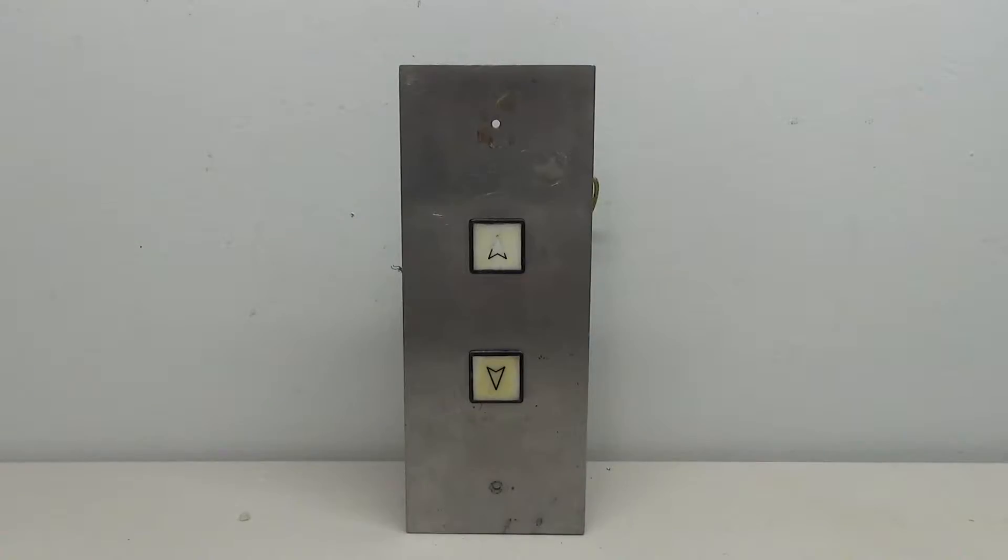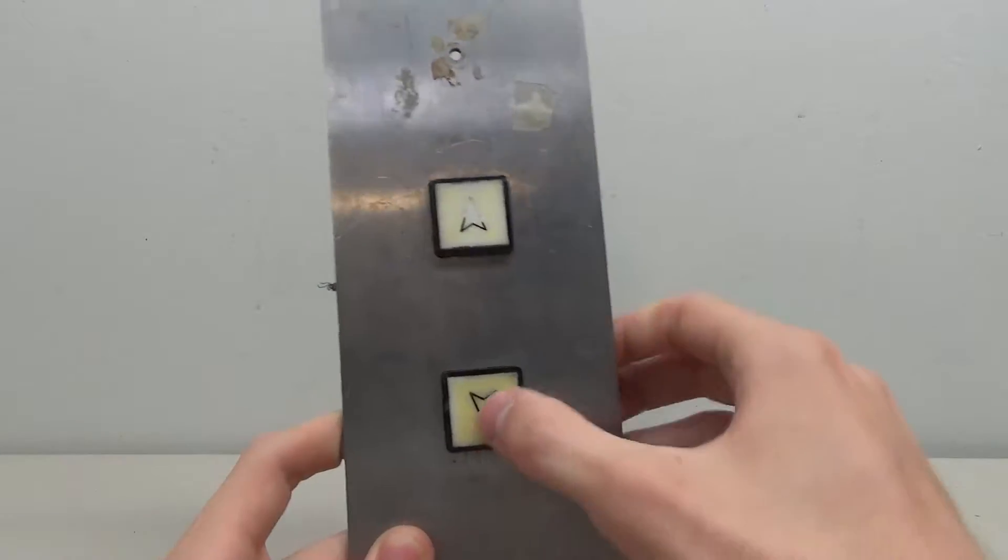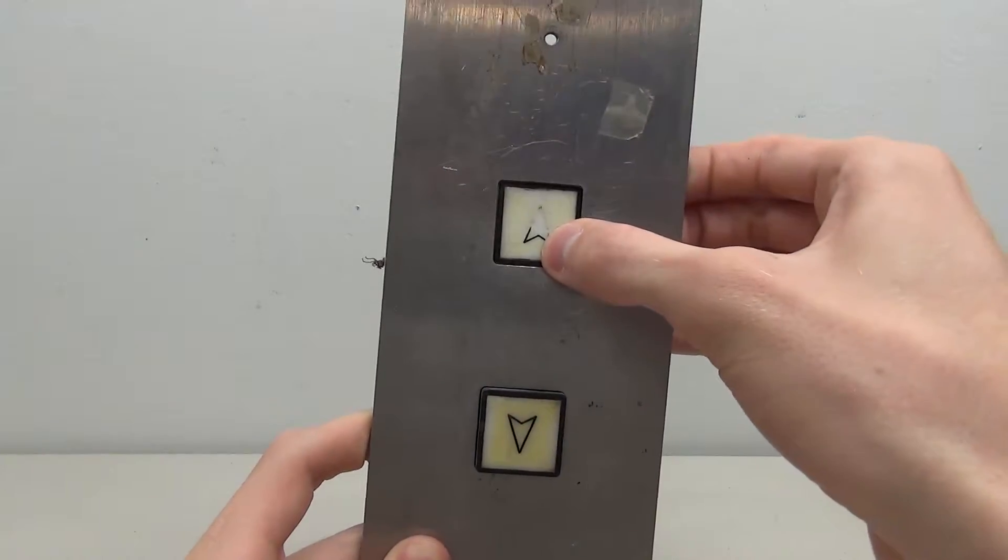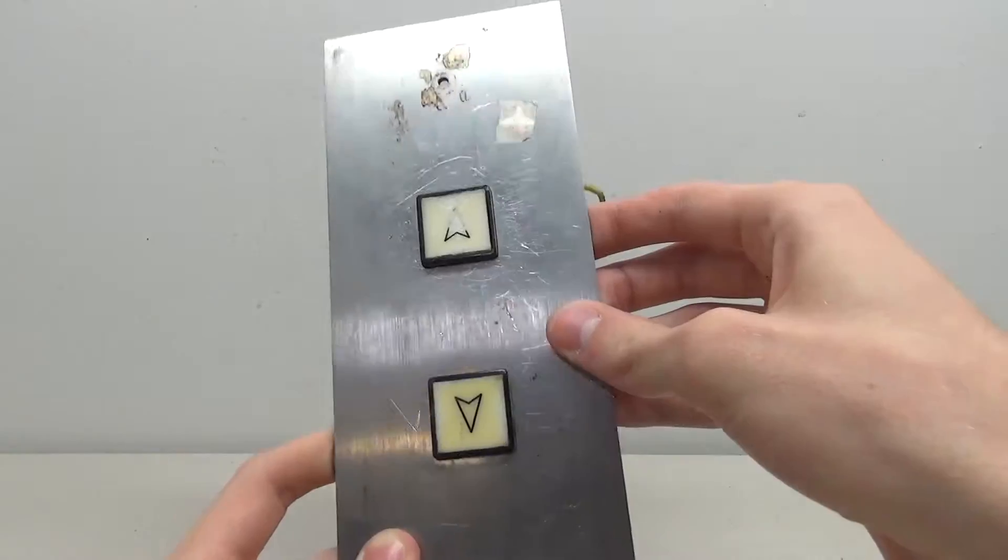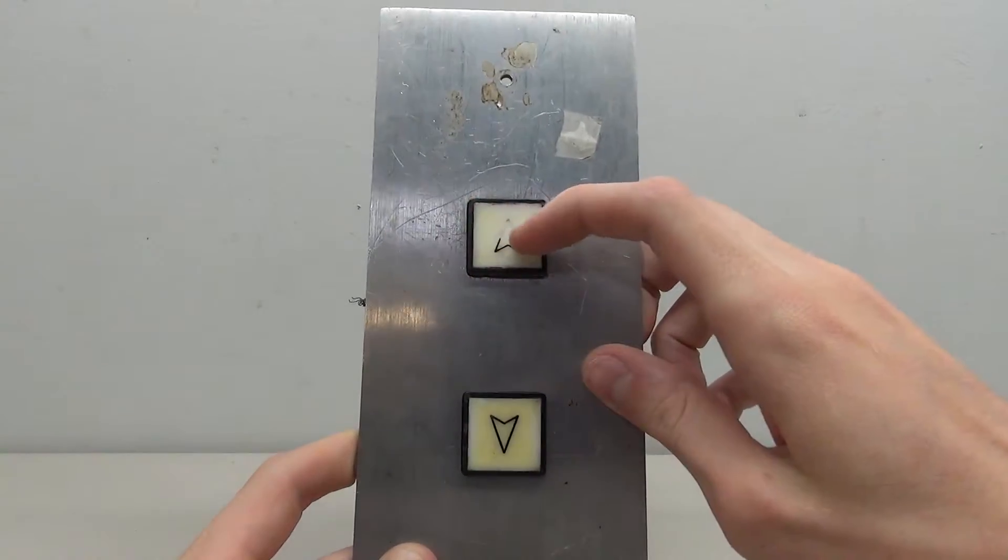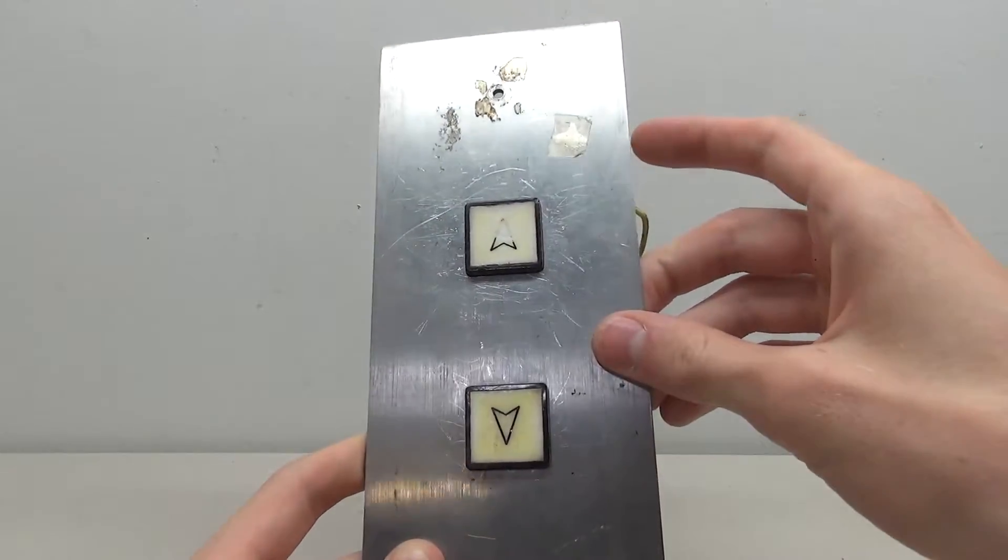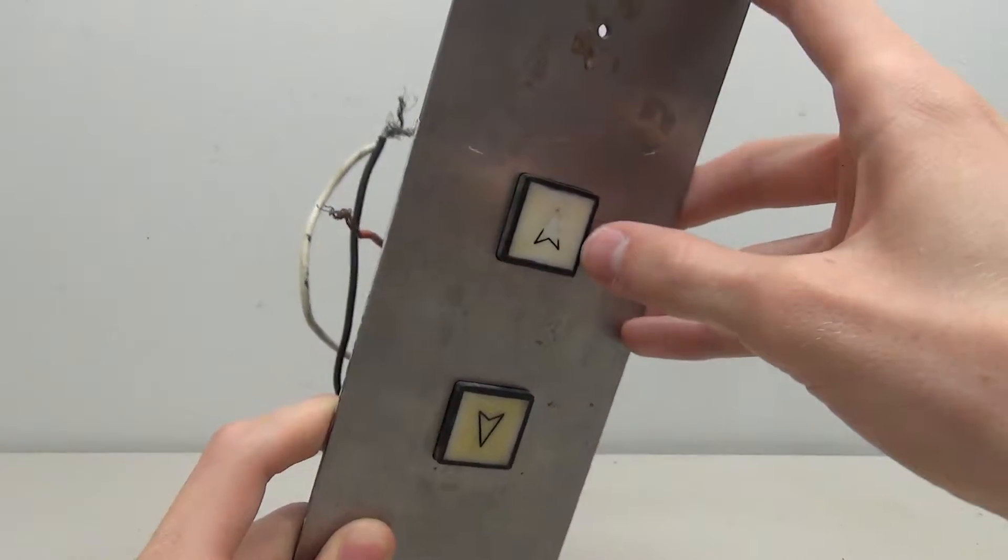Hello everyone, and today on this elevator parts video we're going to be working on this Montgomery square button elevator fixture. These are the older Montgomery square fixtures that are found on the older Montgomery elevators. Some people like to call these Montgomery GMP fixtures, which is not really a real term at all—they're just square buttons.